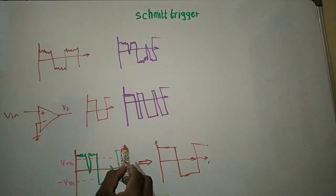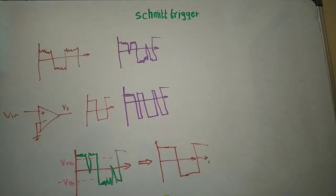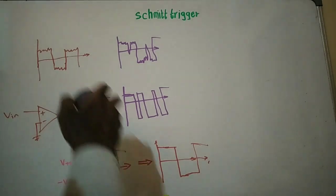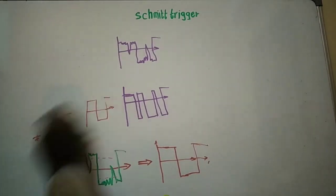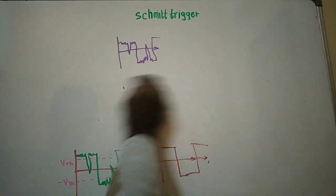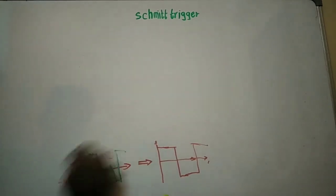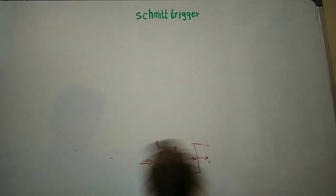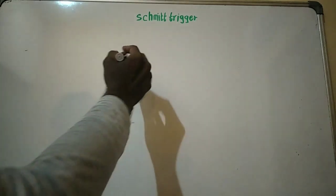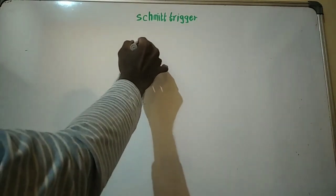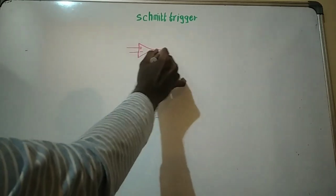Now we will try to build a Schmitt Trigger using an op-amp. It is very easy to understand Schmitt Trigger if we understand the purpose and the need of Schmitt Trigger very clearly. So we have seen the need of Schmitt Trigger. Now we will see the circuit. Let me take an operational amplifier — it has a non-inverting and inverting terminal and one output terminal V0.